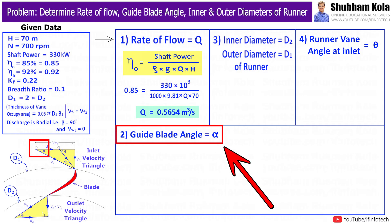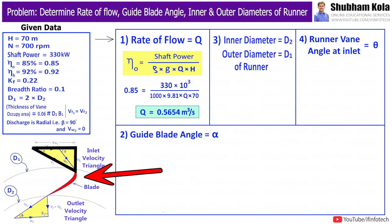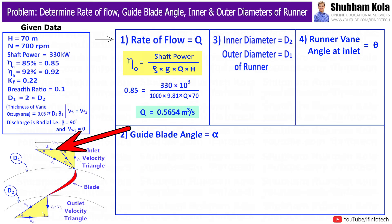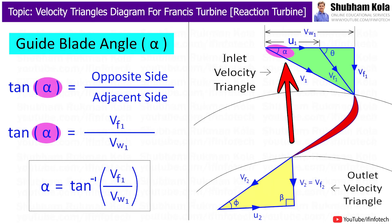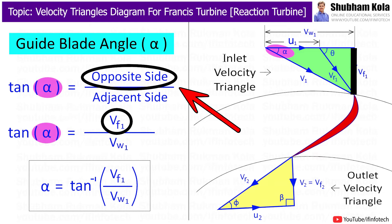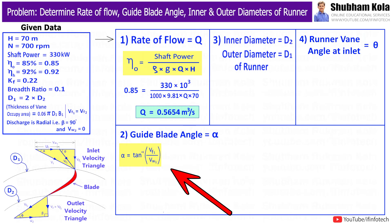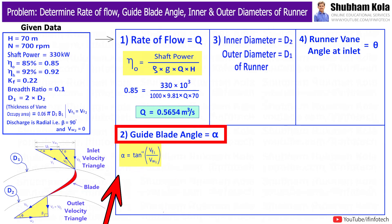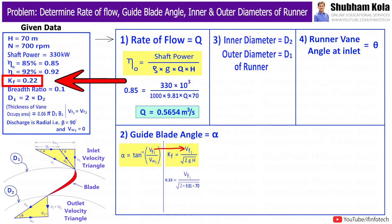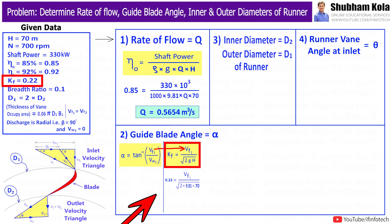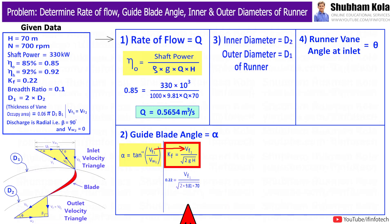Next we need to find guide blade angle alpha. Looking at the figure, alpha is the angle made by absolute velocity V1 at inlet. From the inlet velocity triangle, tan α = Vf1 / Vw1. We don't yet know Vf1 and Vw1, so we first find Vf1 using the flow ratio formula: Kf = 0.22 is given, along with H and g = 9.81, so we substitute and solve for Vf1.